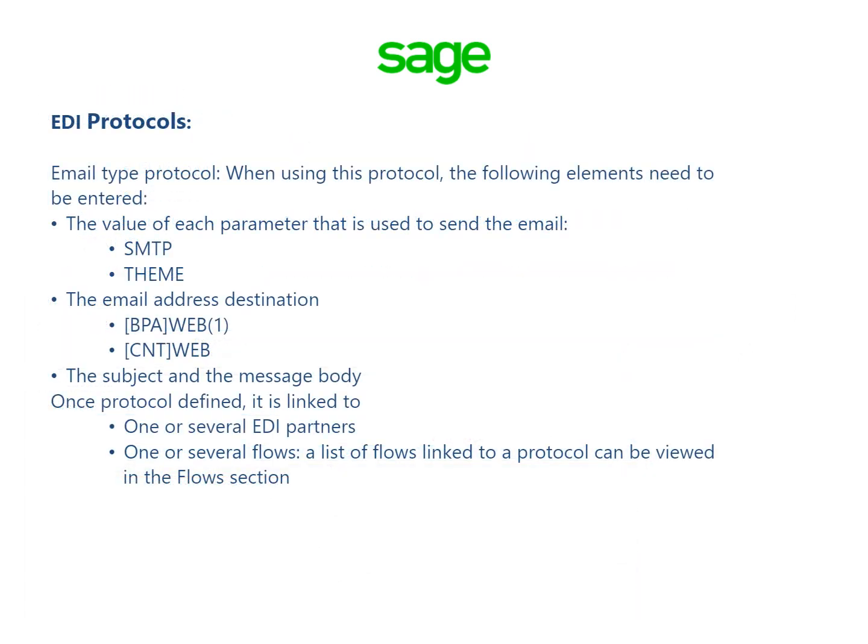When using the email type protocol, the following elements need to be entered: the value of each parameter used to send the email, SMTP and THEME; the email address destination, BPA web and CNT web; and the subject and the message body. Once the protocol is defined, it is linked to one or several EDI partners, and one or several flows. A list of flows linked to a protocol can be viewed in the flows section.